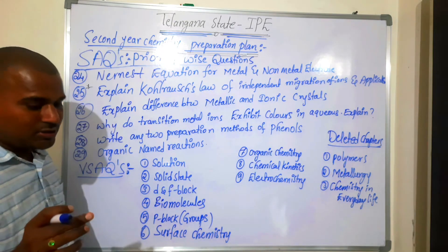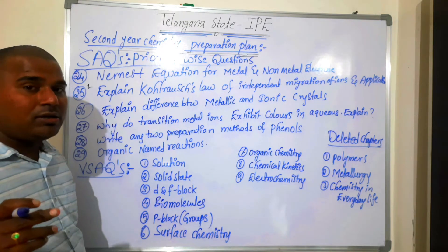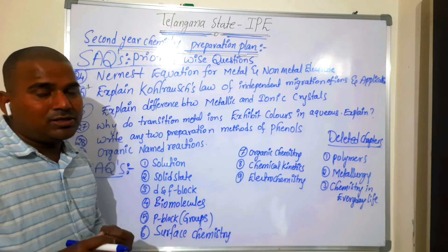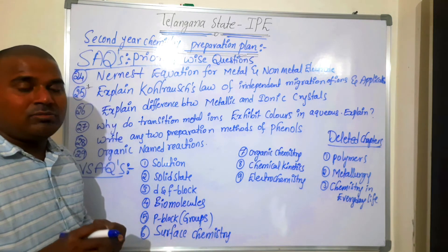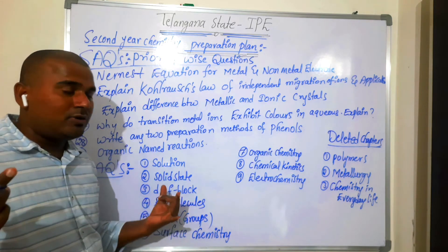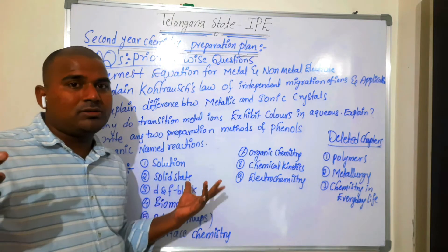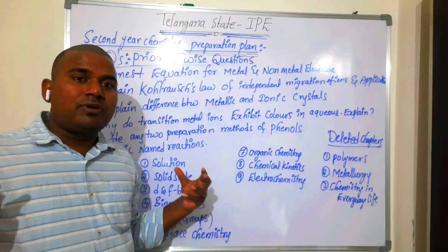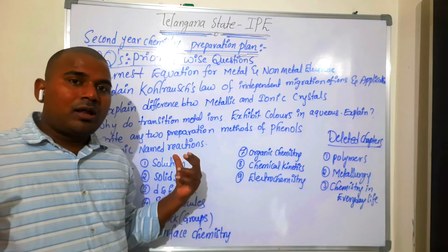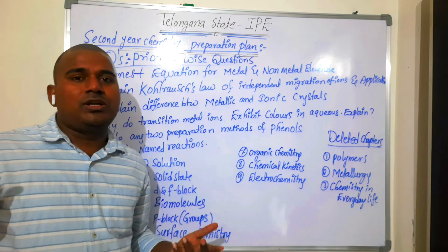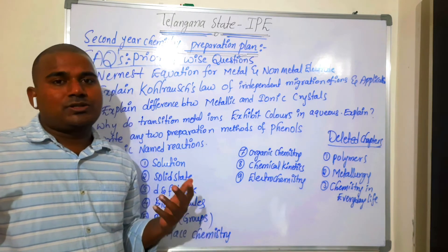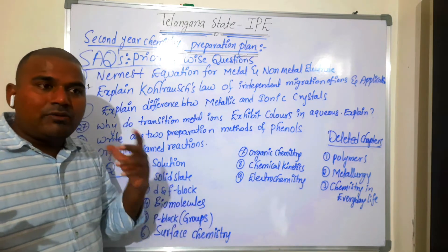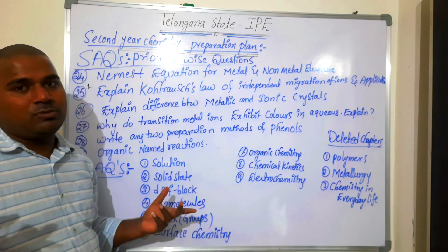Organic named reactions in the SAQ list include HVZ reaction, carbylamine test, Sandmeyer, Gattermann reaction, Friedel-Crafts reactions, Wurtz reaction, Wurtz-Fittig reaction, Swarts reaction, and Finkelstein reaction. In named reactions, how many of the two named reactions there are — four marks each.